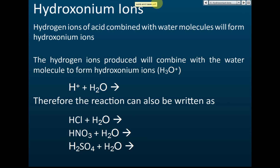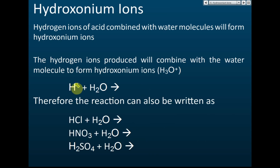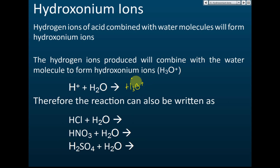We learn about hydroxonium ions. When acids dissolve in water, they form hydrogen ions. These hydrogen ions then react with water to form a new species of ion. Initially we have H2O, but after combining with hydrogen ions it becomes H3O with a positive charge, and this is called the hydroxonium ion.